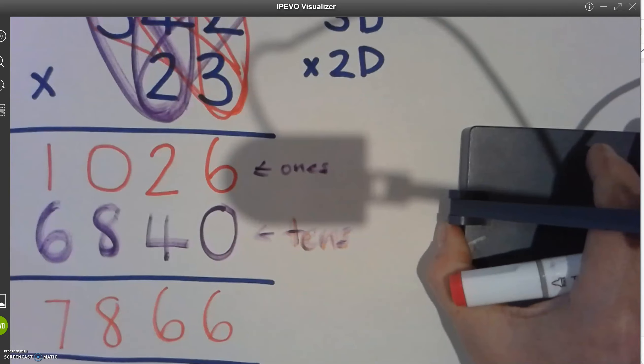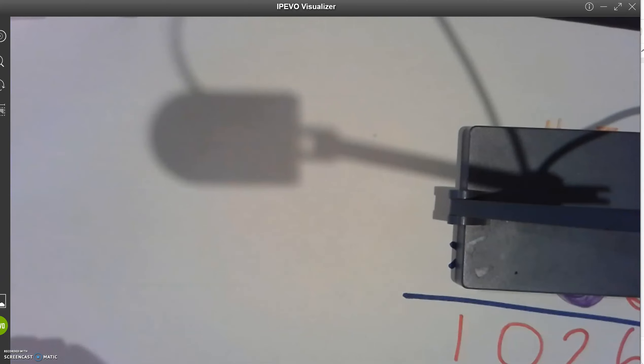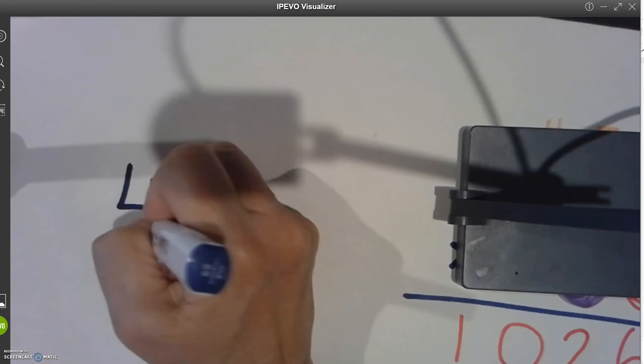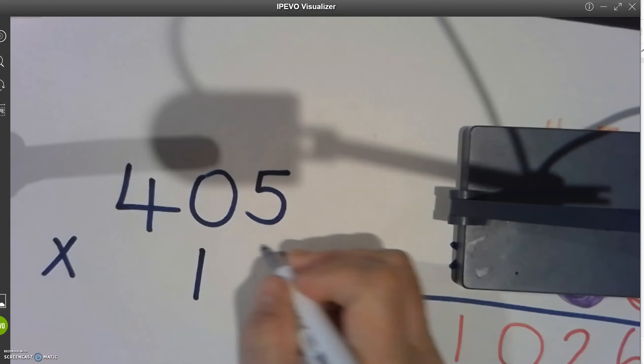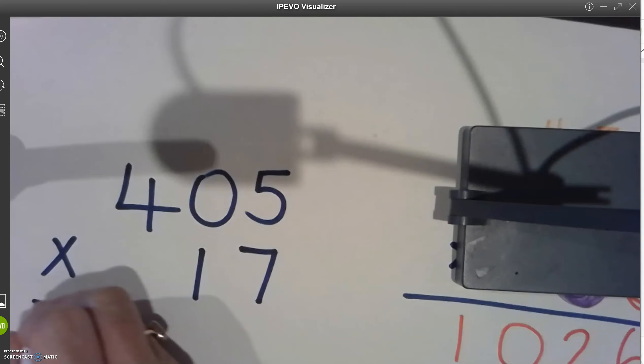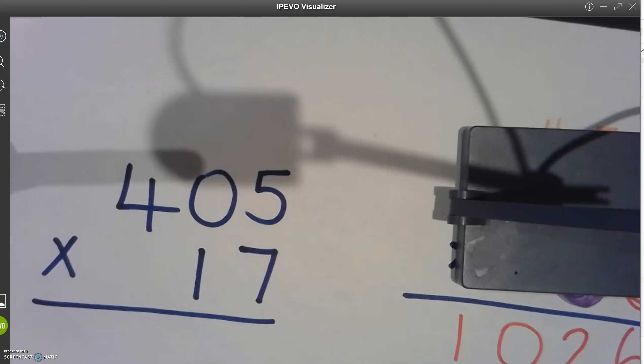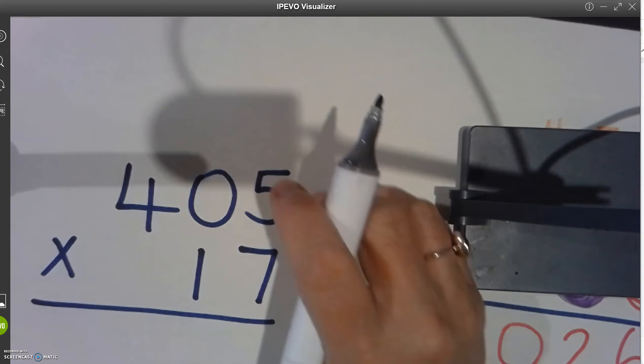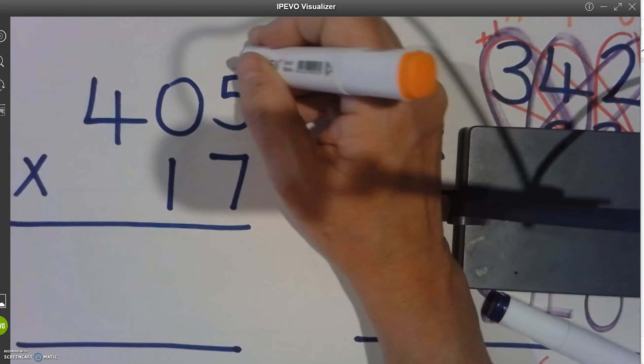Pause the video in a minute and have a go in your maths book of completing this one. Four hundred and five multiplied by seventeen. Don't forget to do your ones first. Then your tens with your surfboards and then get the answer. How did you go, boys? Follow along with me and see how you went.